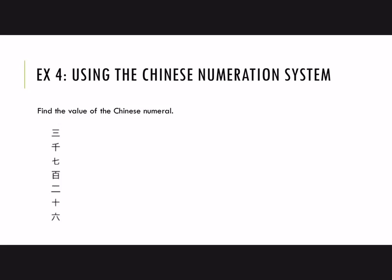Here's another one. This is the symbol for three, followed by the symbol for 1000, and then the symbol for 7, and then 100, and then 2, and 10, and finally 6. So reading these in pairs and multiplying, this would be 3,726.